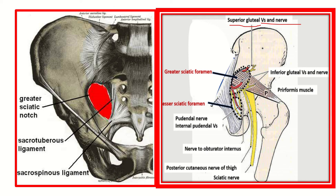Below the piriformis, there are the inferior gluteal vessels and inferior gluteal nerve. So in the greater sciatic foramen, the contents include the piriformis muscle, superior gluteal vessels and nerve, and inferior gluteal vessels and inferior gluteal nerve.